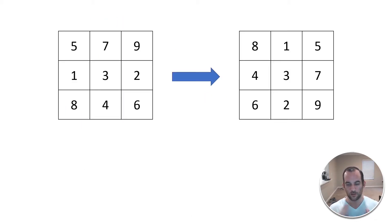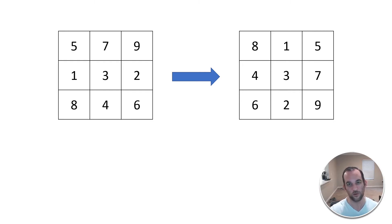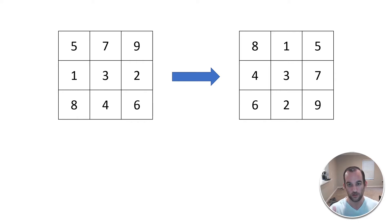Let's start with the first example — a 3×3 matrix. We have the original 3×3 matrix on the left and on the right we have it rotated by 90 degrees. Whenever you're going through a coding interview question, go through example inputs to understand what's actually happening.